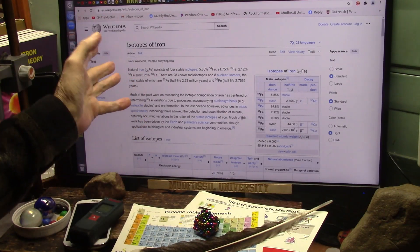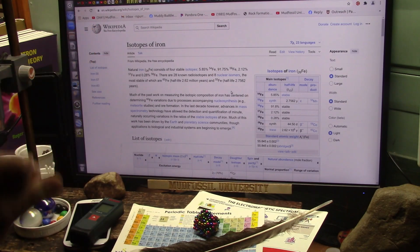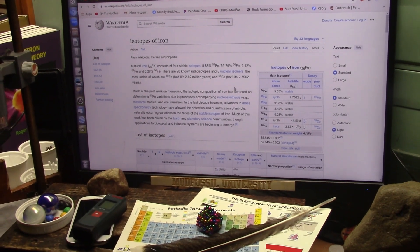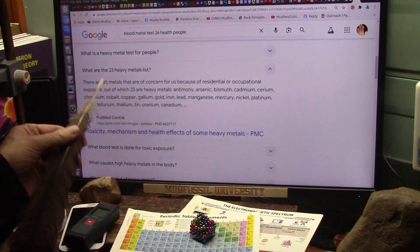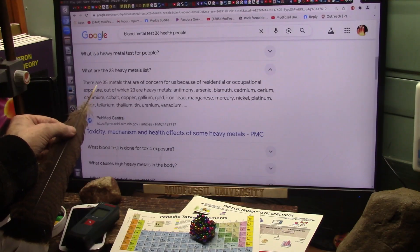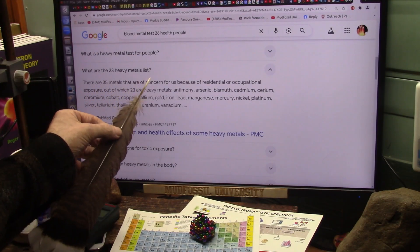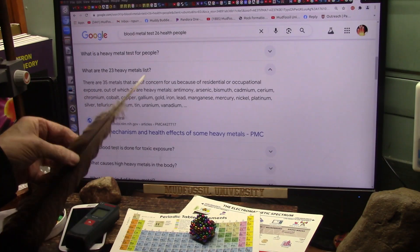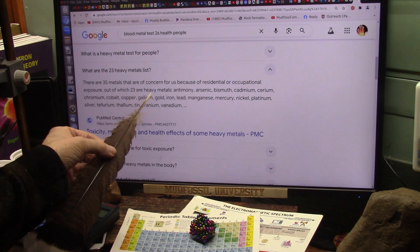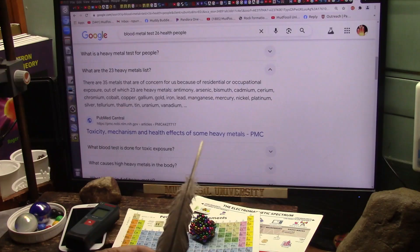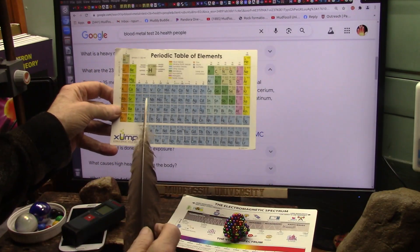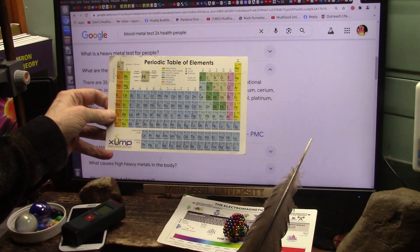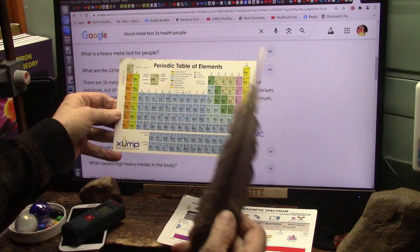Now, these are isotopes, so I'm going to show you something else about isotopes. They're talking about there are 35 metals that are of concern to us because of residential occupational exposure. Well, they're saying 23 are heavy metals. I'm going to tell you something right now, virtually all these transition metals, as far as I can determine, are in blood. They did a survey.